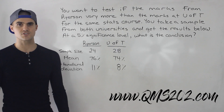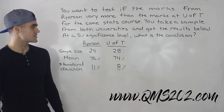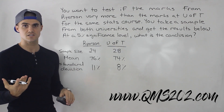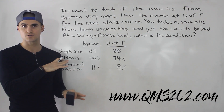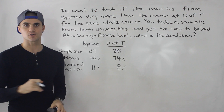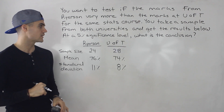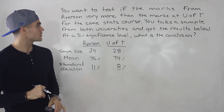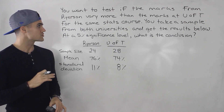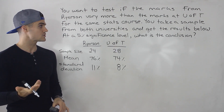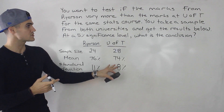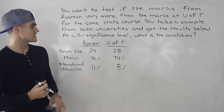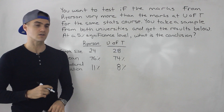Welcome back. Patrick here. Moving on to the next video, we're now going to do an example dealing with the F-test for variances. I'm going to show you how to do it manually, and then at the end, I'm going to show you how to do it with the calculator as well. So you want to test if the marks from Ryerson vary more than the marks at U of T for the same stats course. You take a sample from both universities and get these results at a 5% significance level. What is the conclusion?